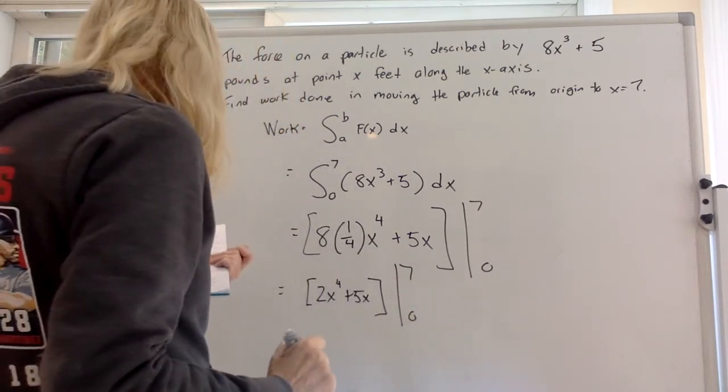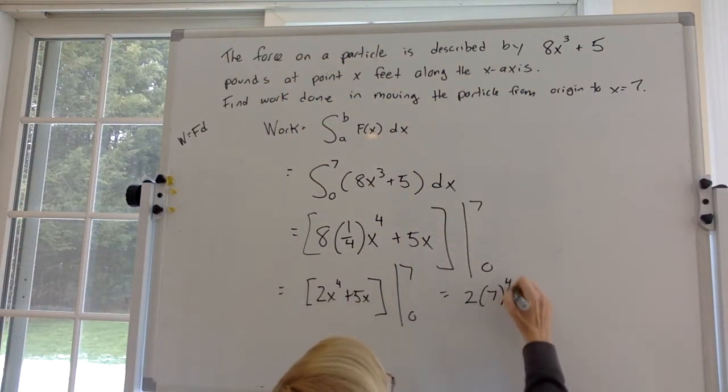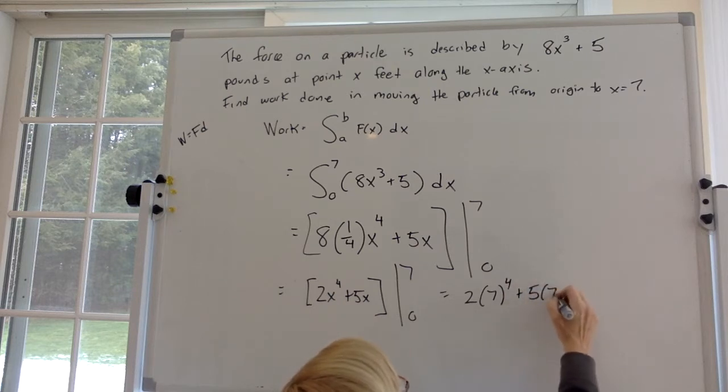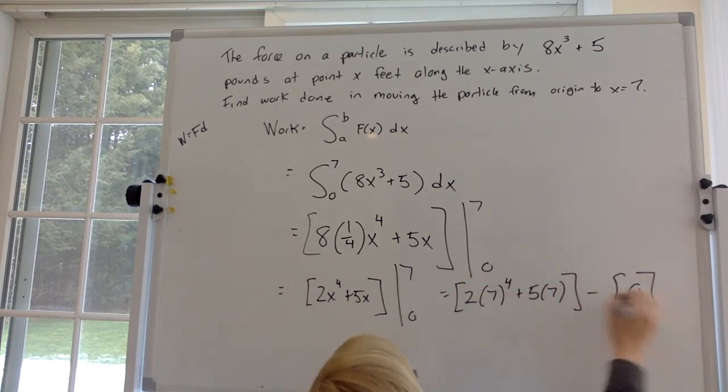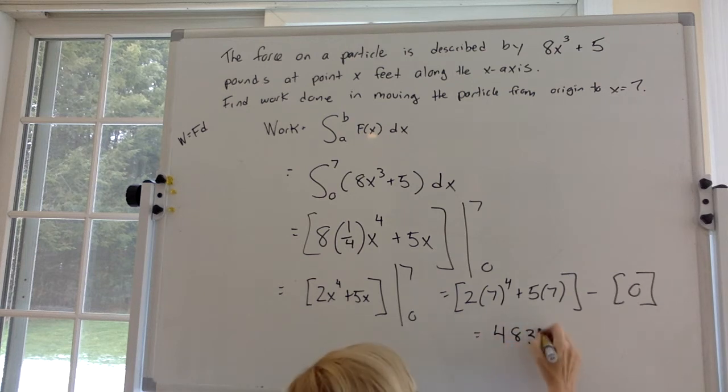Equals 2 times 7 to the 4th plus 5 times 7 minus, oh, we put 0 in, everything goes to 0 for the second part. So what do we end up with? 4837.